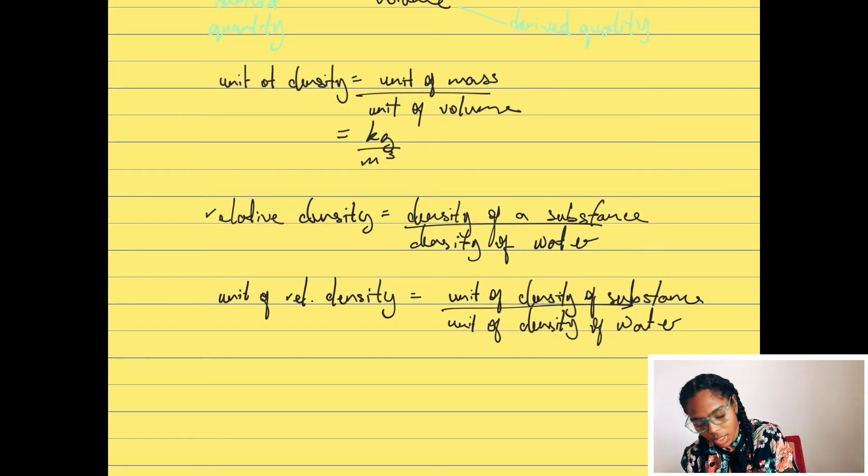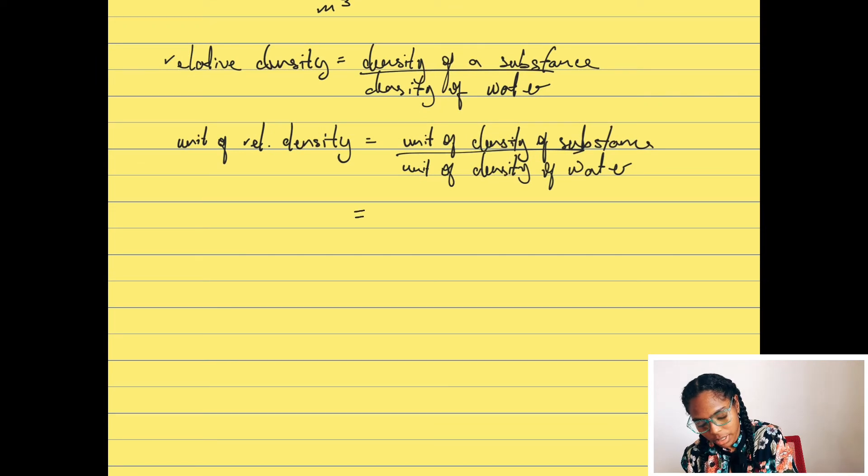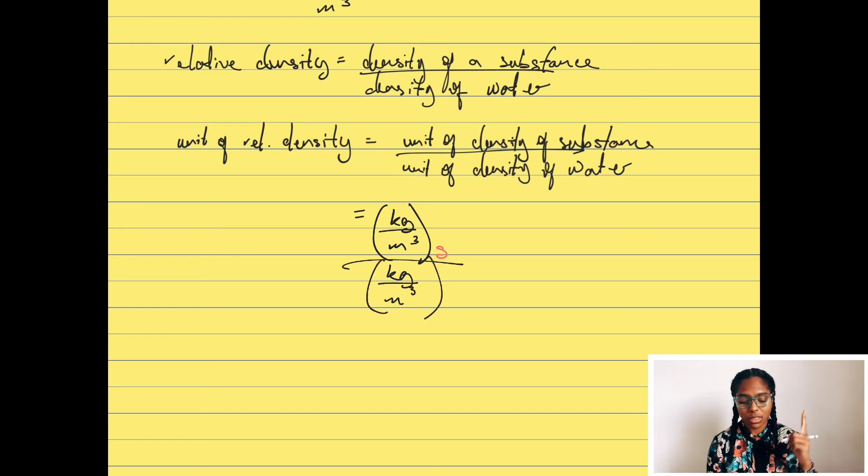So for the substance, it would be kilogram per meter cubed. And then for water, it's still density, so the unit would still be kilogram per meters cubed. So kilogram per meters cubed for the substance and kilogram per meters cubed for the water.